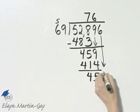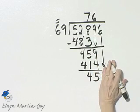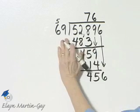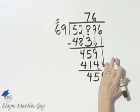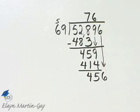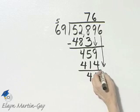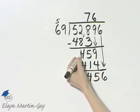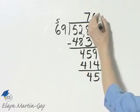And then let's bring down the 6. Now, by the way, notice my difference here was less than my divisor, so I was okay. And 6 actually was correct. Since I have 456, close to 459, let's try 6 again.